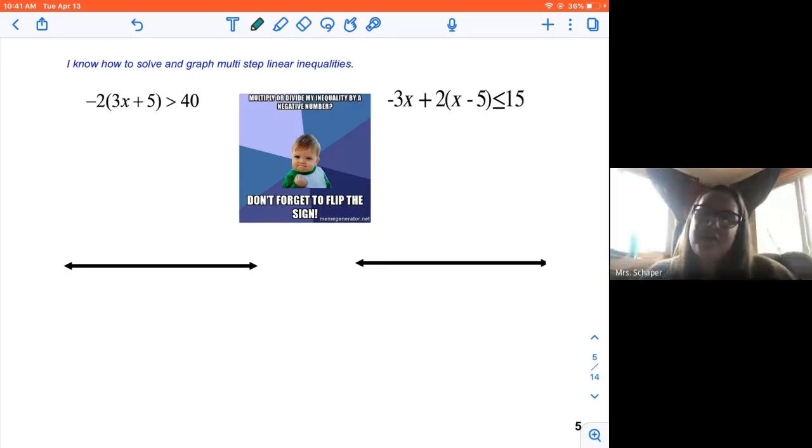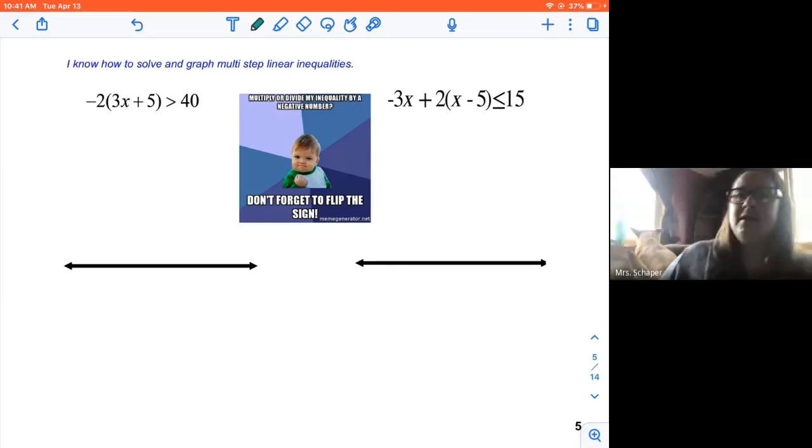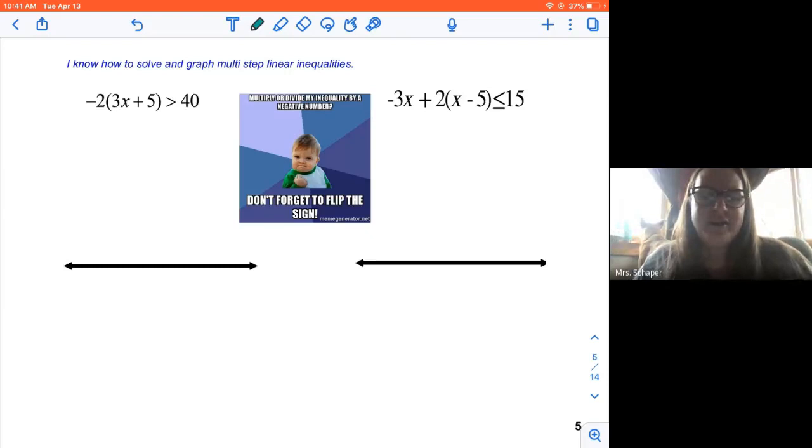We're back with another day of solving inequalities. We're going to be doing some two-step inequalities as we go through three-step, four-step, whatever. If you see the tail behind me, it's my dog. She's just deciding to come sit by me. We just go with it here, right? Okay, so here we go.